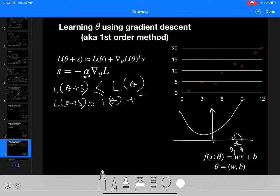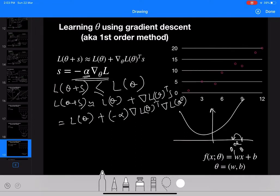Now if I substitute this value of s, what we can see is it becomes L of theta plus minus alpha times gradient of L of theta transpose the gradient of L of theta. And this quantity is basically norm of gradient of L of theta squared.